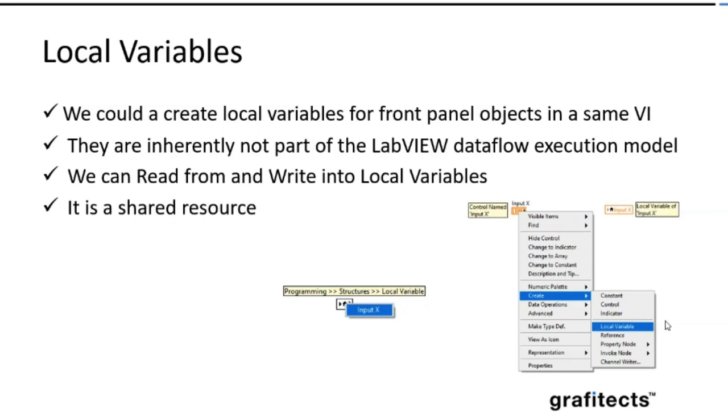We can read from and write into the local variables. And even if it is a control, we can write the data. And even if it is an indicator, we can read the data from the indicator as well. In effect, with a local variable, we can access a front panel object as both input and output, and it is a shared resource. So we need to handle it very carefully within our programs.